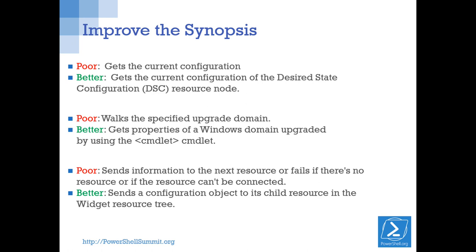Let's fix these synopses. Instead of 'Gets the current configuration,' say 'Gets the current configuration of the desired state configuration resource node.' Just a couple of extra words. 'Walks the specified upgrade domain' becomes 'Gets the properties of a Windows domain upgraded by using this command' — by 'walks the domain' they just meant 'returns property values.' 'Sends information' becomes 'Sends a configuration object to the child resource in a resource tree.'